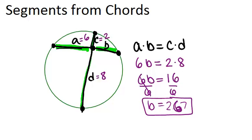So anytime you have a situation where there's two chords intersecting and you know three of the segments, you'll always be able to solve for the fourth segment using this relationship.